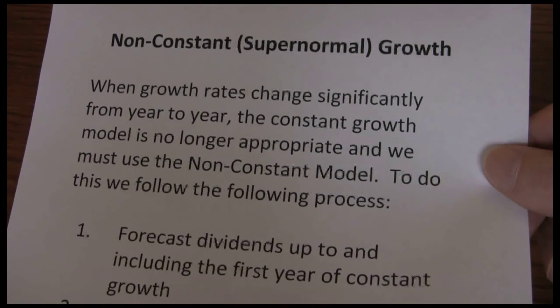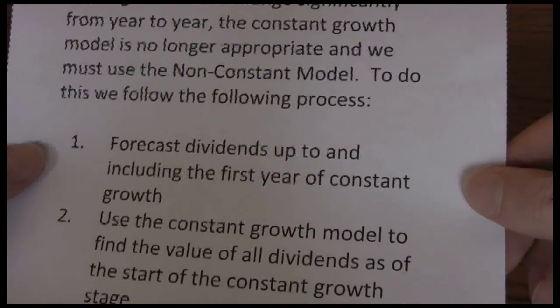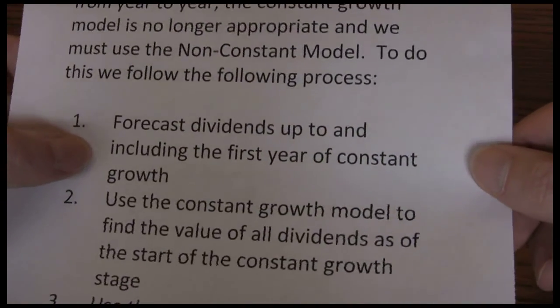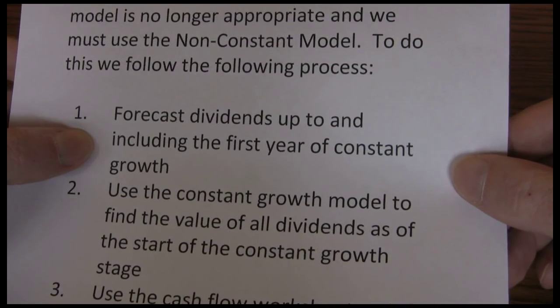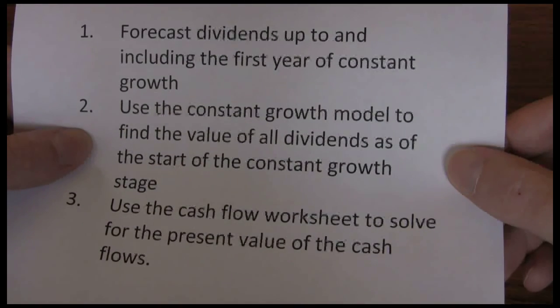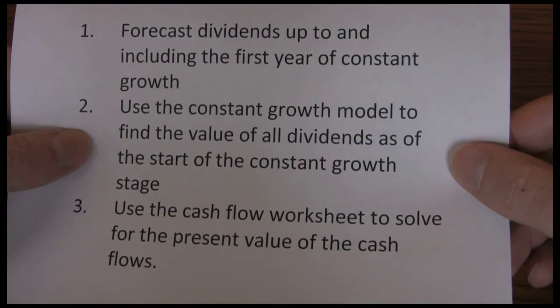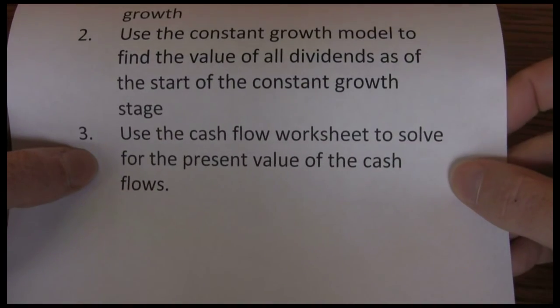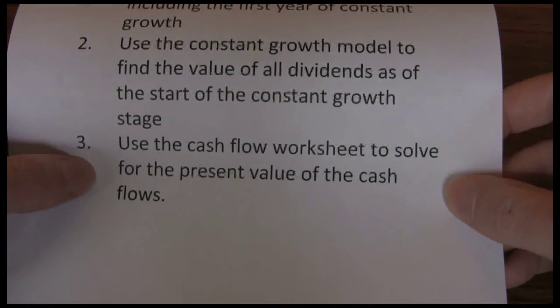When we go through the non-constant or supernormal growth model we want to do a three-step process. First, forecast dividends up to and including the first year of constant growth. Then use the constant growth model to find the value of all dividends as of the start of the constant growth stage. Lastly, use our cash flow worksheet to solve for the present value of the cash flows.